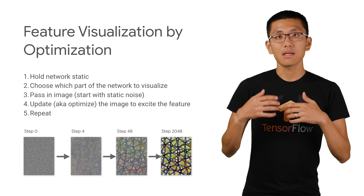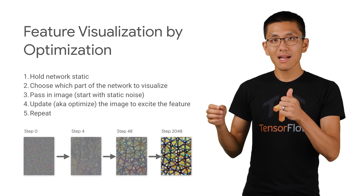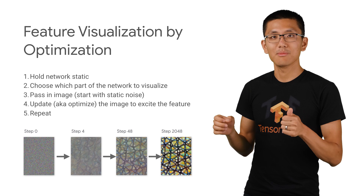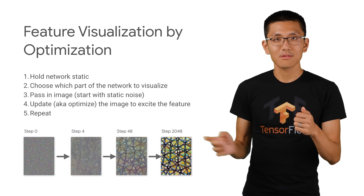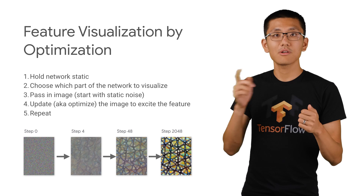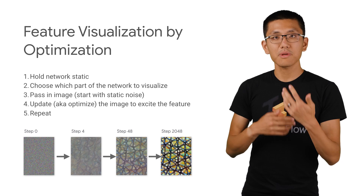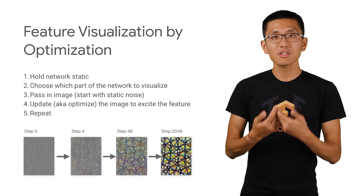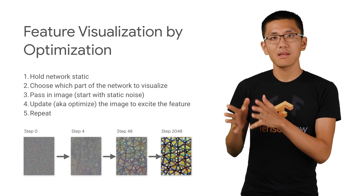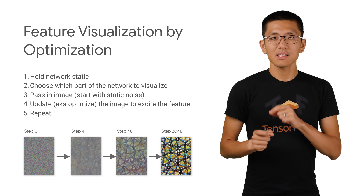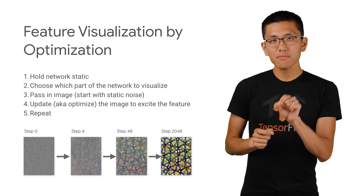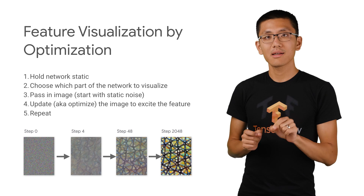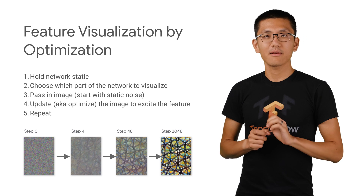We can adjust the image to boost that activation of the neuron's response to the image and pass it through. Over and over again we repeat this process, and eventually you end up with an image that has been optimized to activate one particular neuron of the network maximally.